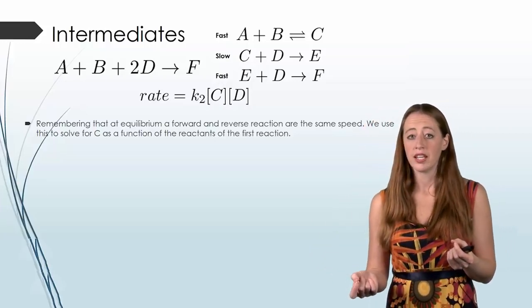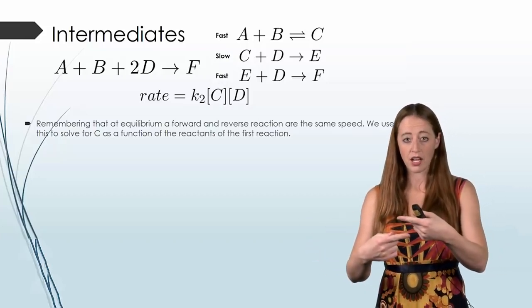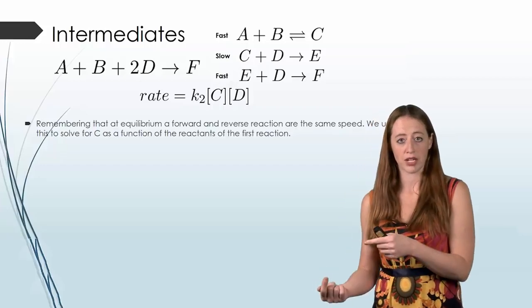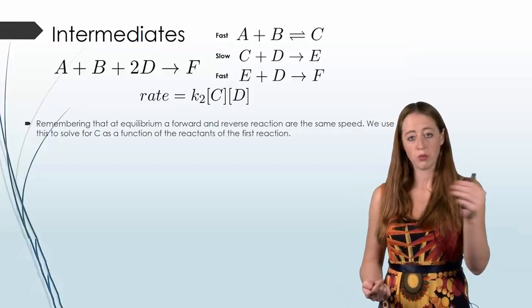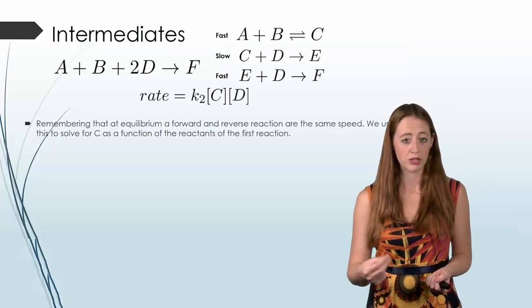If that's true, that means that they have to be changing at the same rate. Otherwise, the amount of reactants or the amount of products would change. So the forward reaction and the reverse reaction have to be the same rate in order to keep that stable.